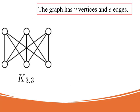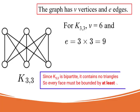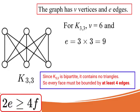Now for K33, it has 6 vertices, 9 edges. Since K33 is bipartite, it contains no triangles. So every face must be bounded by at least 4 edges. This gives a stronger inequality. 2E is greater than or equal to 4F.